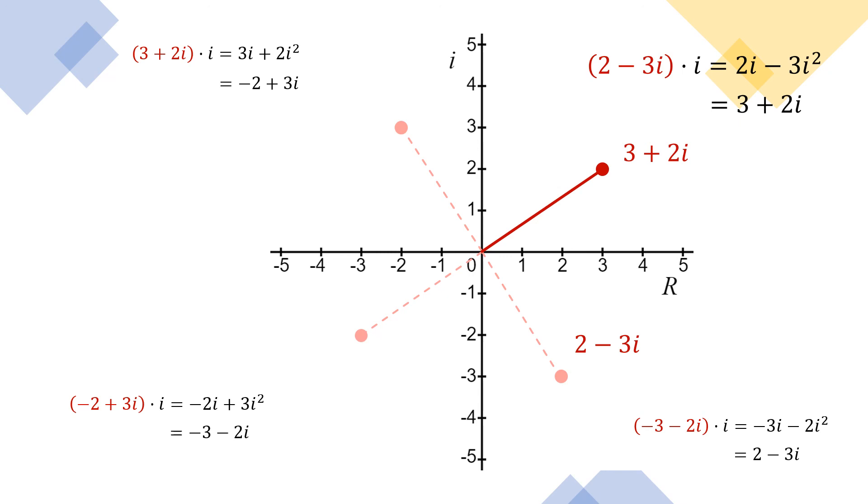So when you multiply by i four times, you're back to where you started. And of course, we knew that was going to be the case because what's i to the fourth? Well, one. And when we multiply by one, it doesn't change the value. Okay, well, thanks for checking out this visualization and be sure to subscribe to my channel for more math videos.